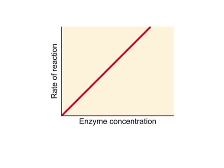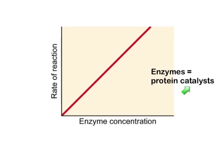To be a bit more specific, enzymes are proteins that act as catalysts. A catalyst is just a term for a substance that speeds up a reaction. This graph shows the effect enzymes have on the speed of a reaction — as you add more of an enzyme, the reaction rate goes up.